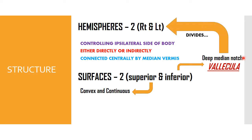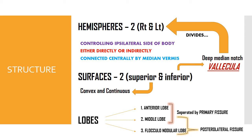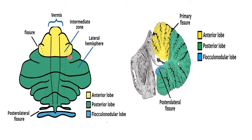The deep median notch is called the vallecula, which divides the cerebellum into right and left hemispheres. The lobes present in the cerebellum are the anterior lobe, middle lobe, and flocculonodular lobe. The anterior and middle lobes are separated by the primary fissure, and the middle and flocculonodular lobes are separated by the posterolateral fissure. In these pictures you can see the vermis centrally and the fissures.